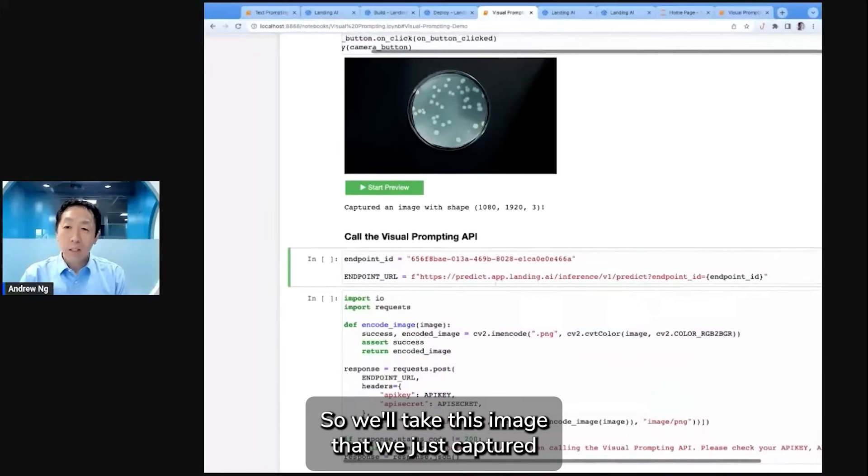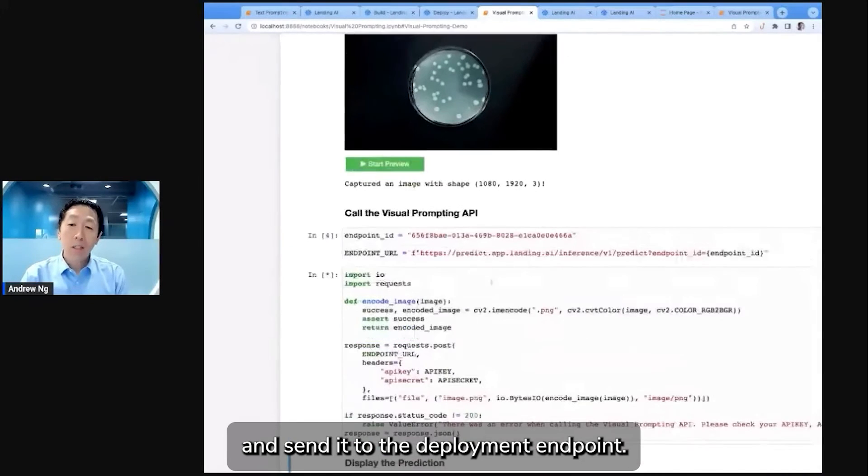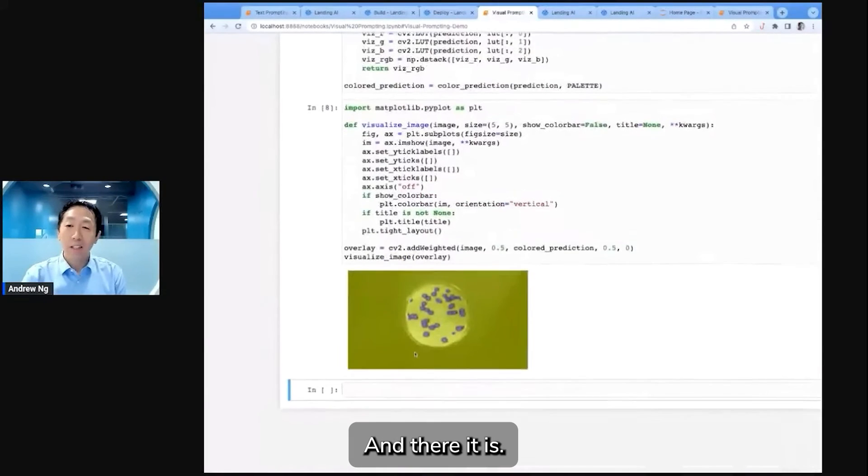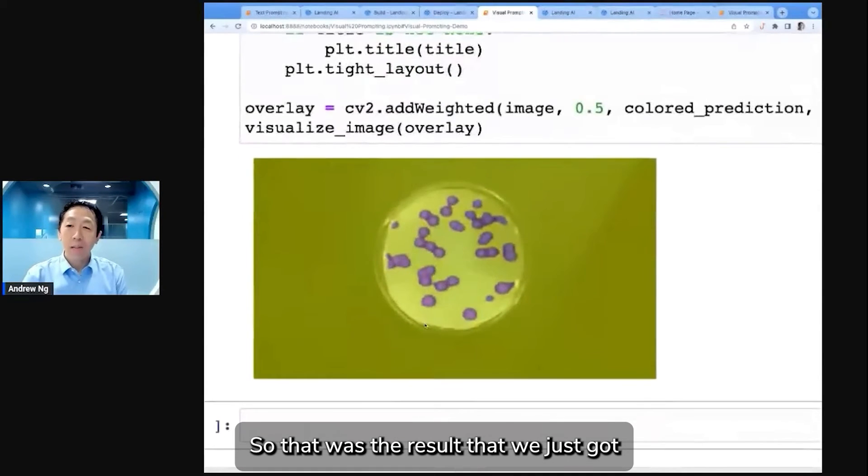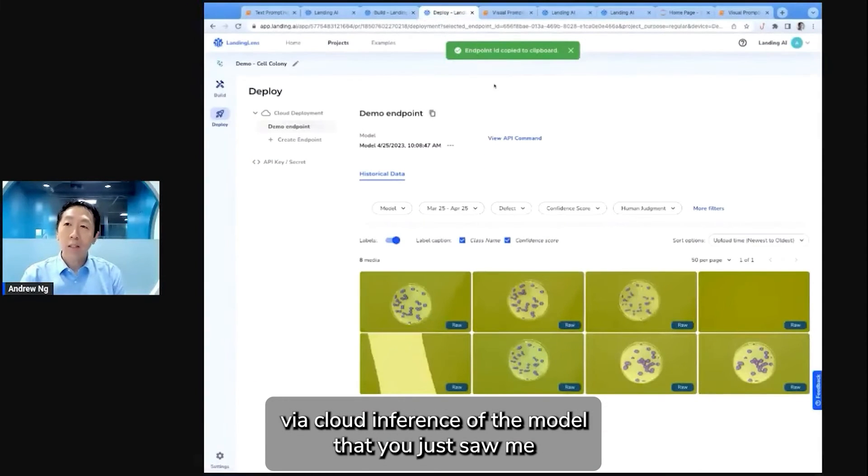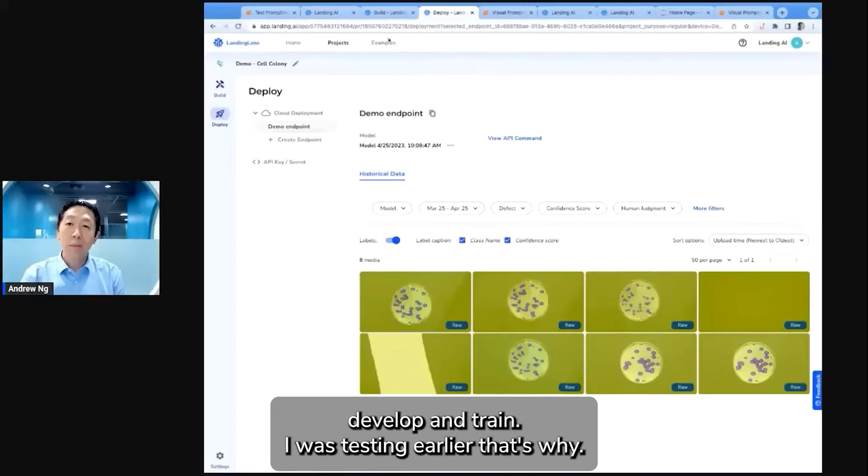So I'm going to take this image that we just captured and send it to the deployment endpoint. And there it is, right? So that was the result that we just got by cloud inference of the model that you just saw me develop and train.